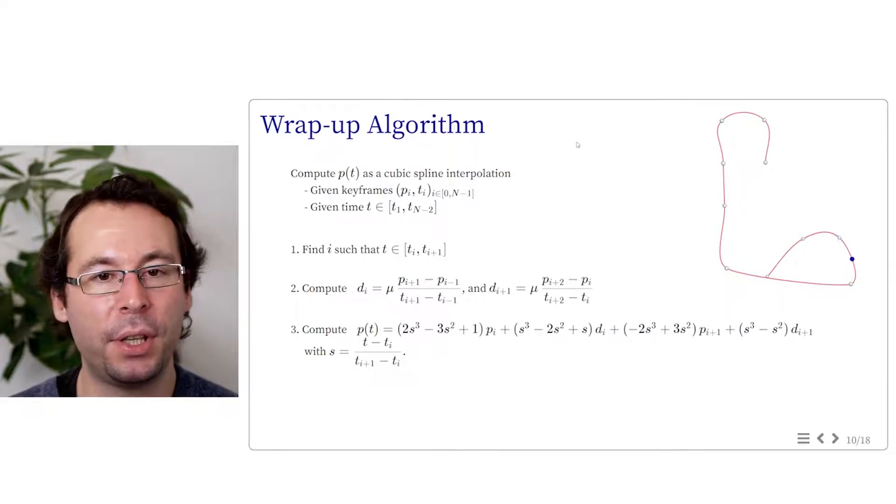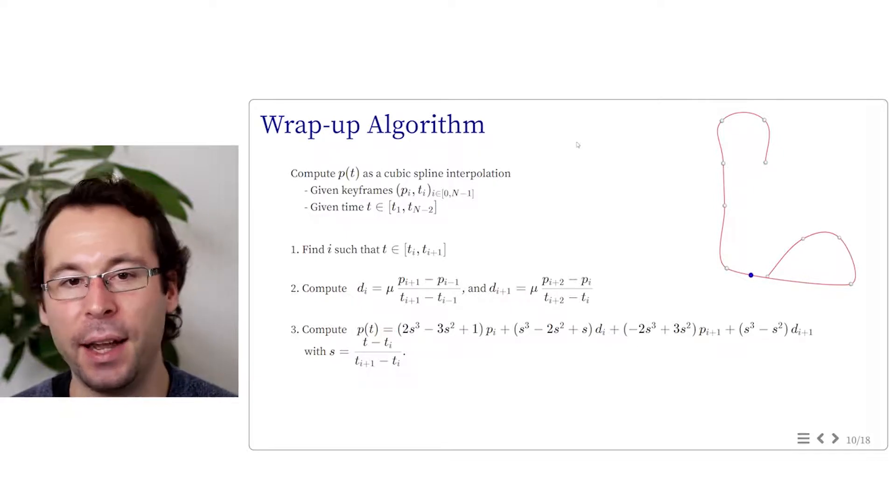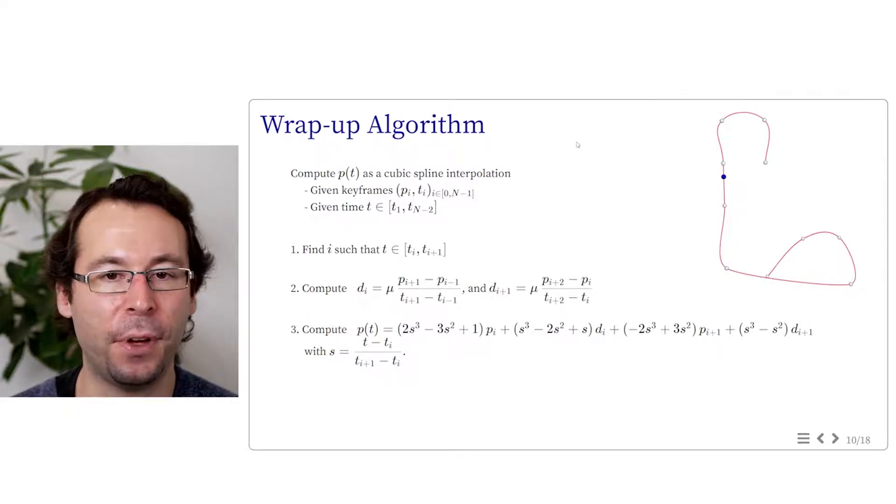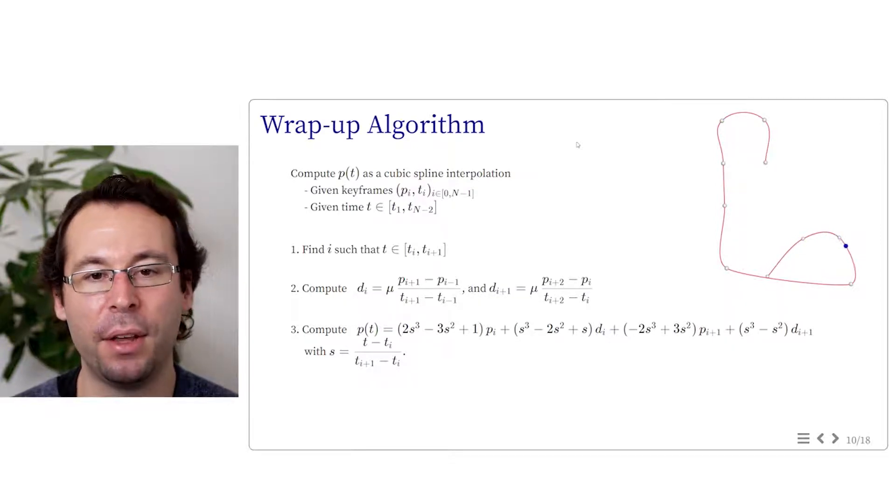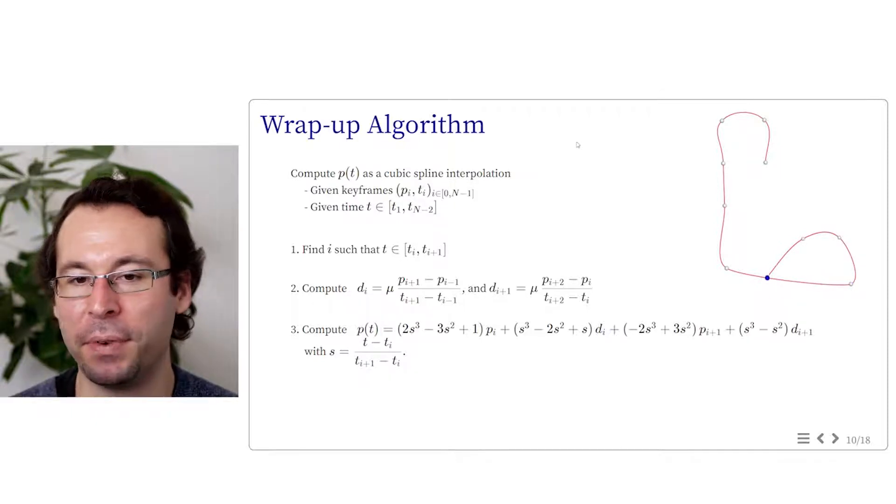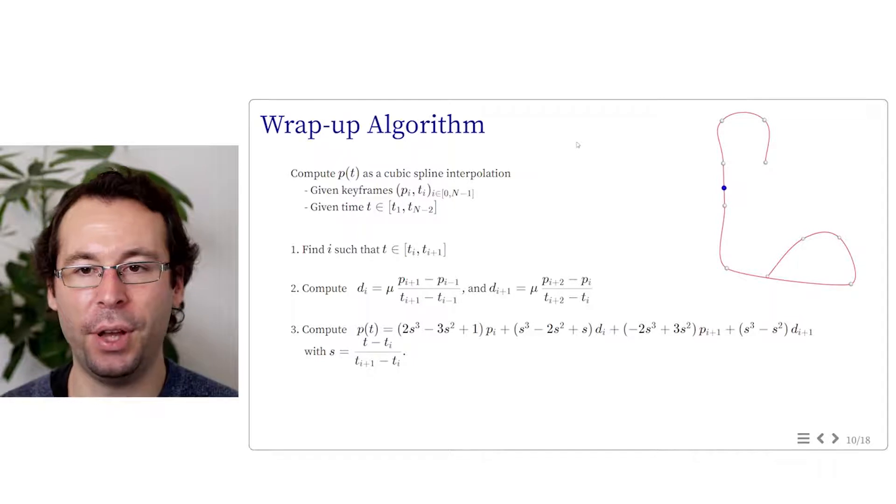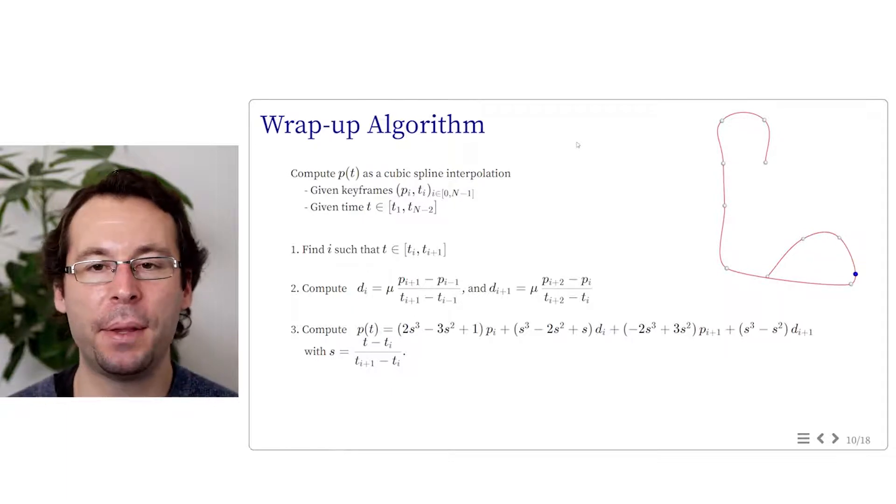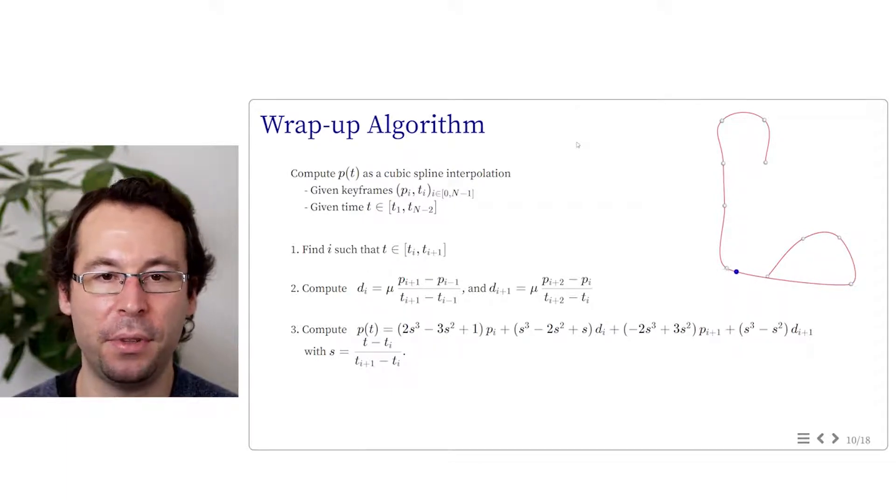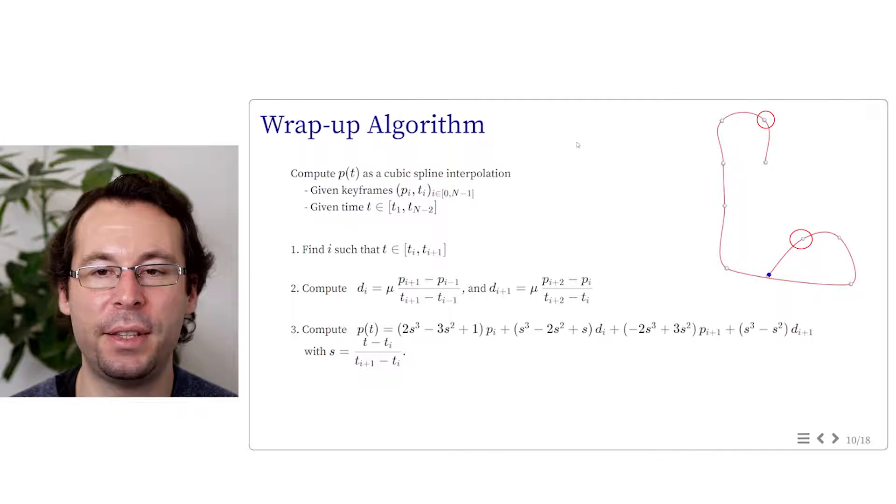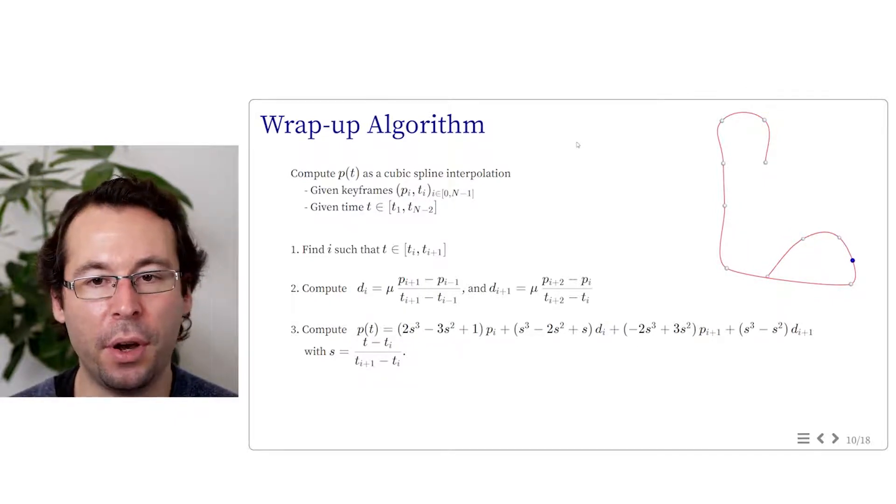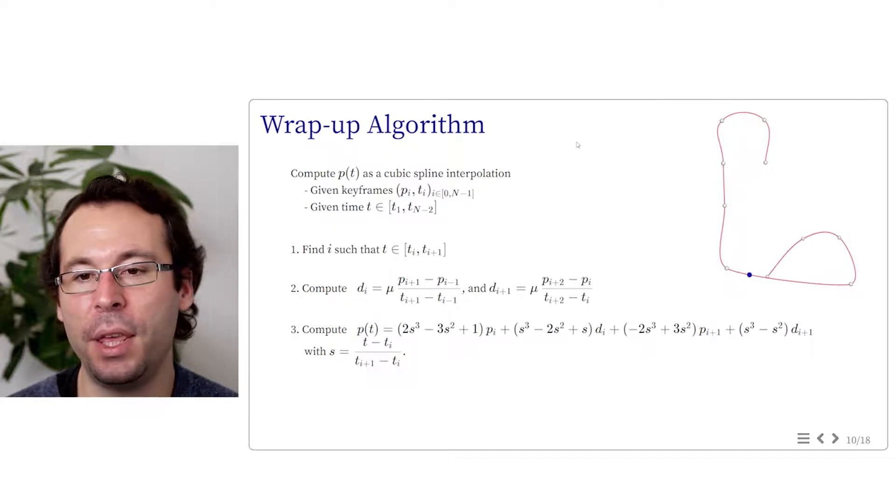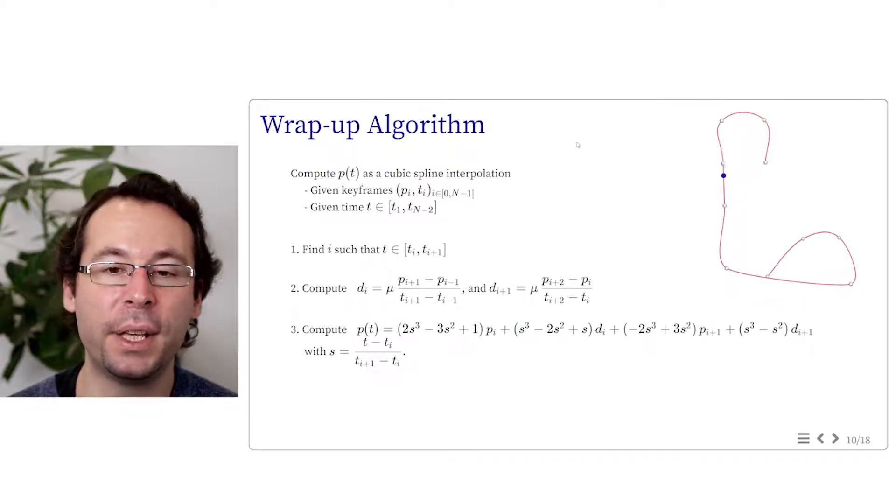This is the summary of the approach. Given a set of key points pi at time ti, if you look for the position p at time t, first you need to find the interval ti and ti+1 in which t belongs. Then you can compute the derivatives automatically using the finite differences. And finally, you can apply the Hermit representation to compute the position of your point. Note that you need p i-1 and p i+2 to evaluate the derivative. So you can only draw your curve between the second time t1 up to the penultimate one t n-2. If you want to close your curve or go from the beginning to the end, then you will have to either set specific derivatives or duplicate points, for instance.